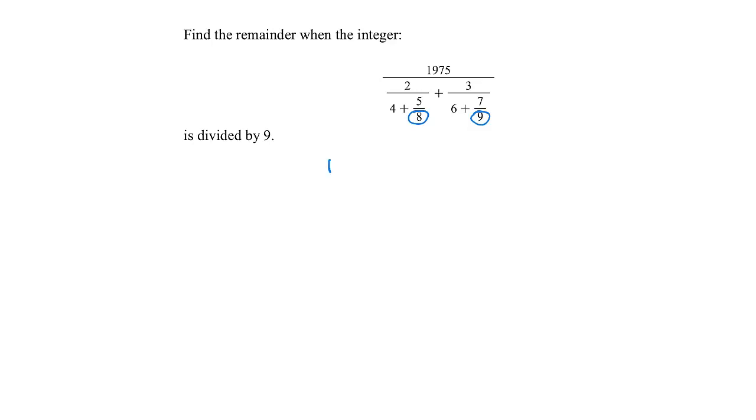We still have 1975 on the top. Then the fraction on the left-hand side of the bottom gets multiplied top and bottom by 8. So we have 16 and then 32 plus 5.